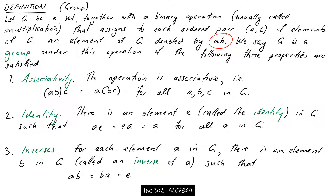The first property is associativity — our binary operation must be associative. That means if you're calculating A times B times C, it doesn't matter whether you calculate AB first and then multiply by C, or whether you calculate BC first and then multiply on the left by A. You could test this on the dihedral group using the multiplication table. This must be true for all A, B, C we pick from our group G.